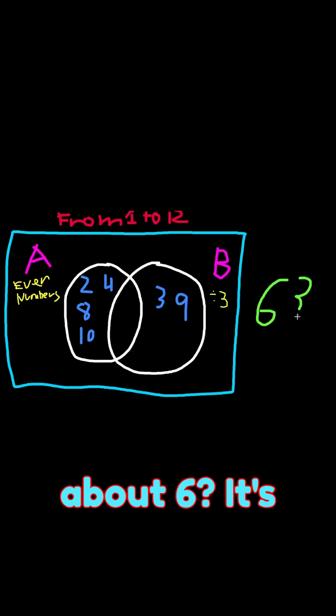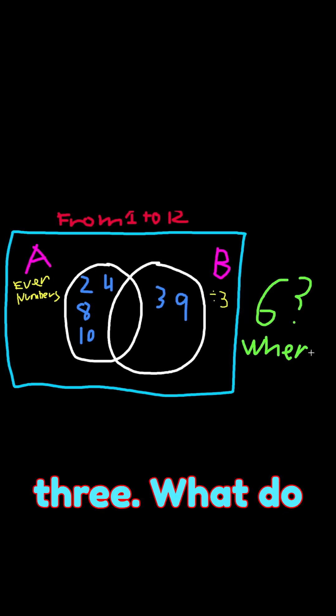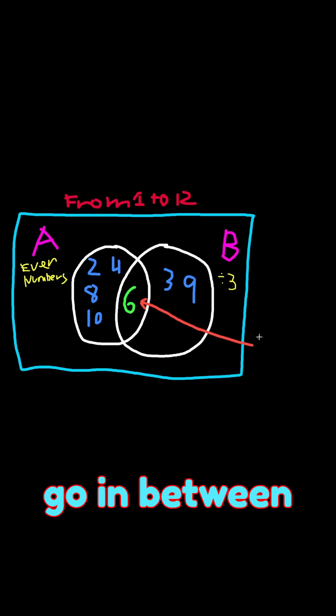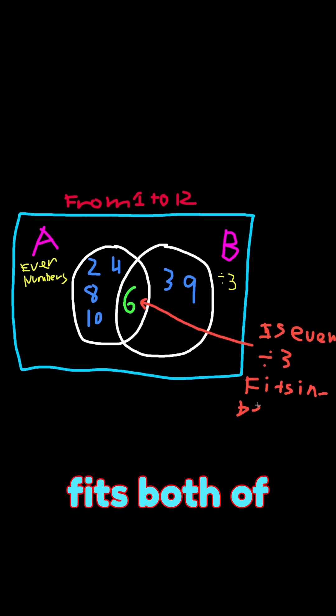But what about 6? It's even and divisible by 3. What do we do now? Well, it would go in between both circles because the number 6 fits both of the rules.